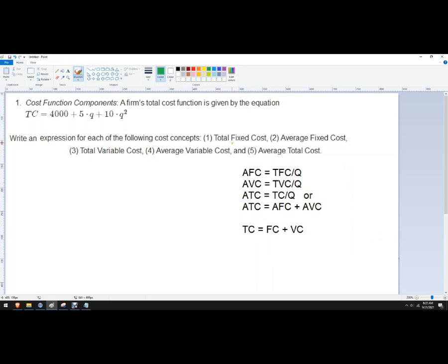So fixed costs are costs that don't change based on how much we produce. So you could think of it, you could plug in a zero here and a zero here that turns those to zero. So if I produce nothing, it's going to be 4,000.